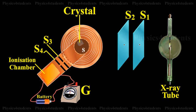Bragg spectrometer is similar in construction to an ordinary optical spectrometer. X-rays from an X-ray tube are made to pass through two fine slits S1 and S2 which collimate into a fine pencil.